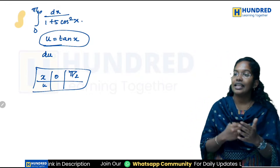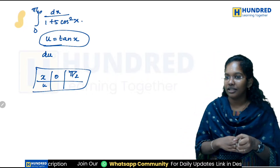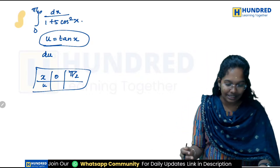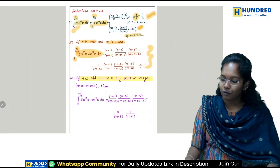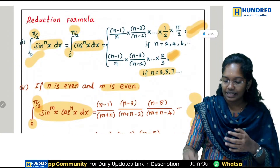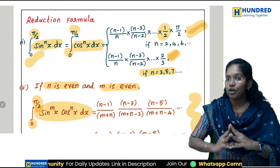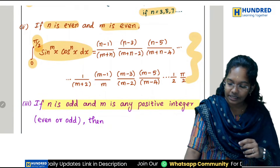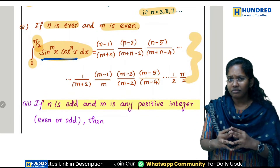For exercise 9.6, reduction formula is these four formulas. First is sin^n x dx formula, then cos dx formula. Reduction formula is used when limits are from 0 to π/2. The third formula involves sin^m x cos^n x.